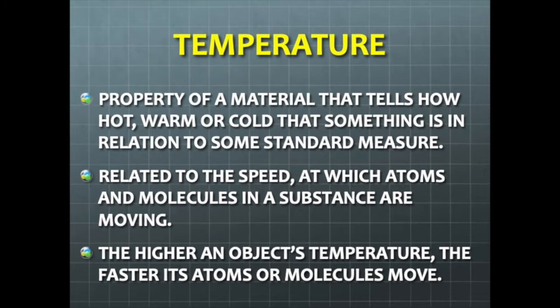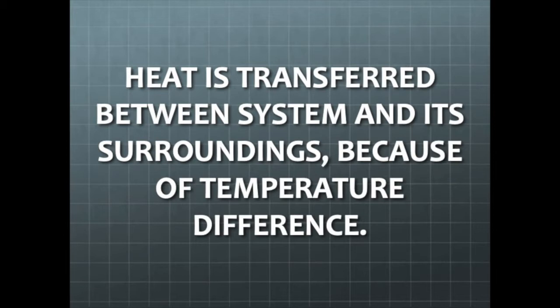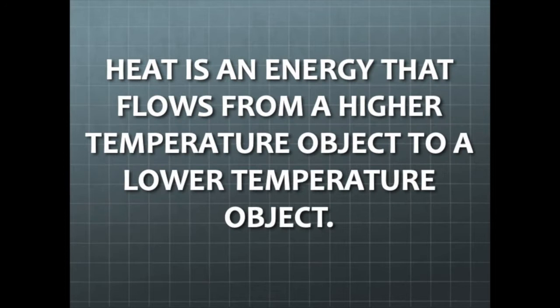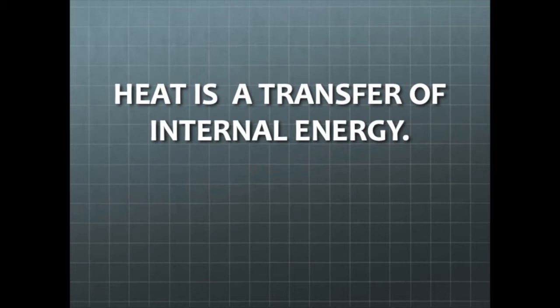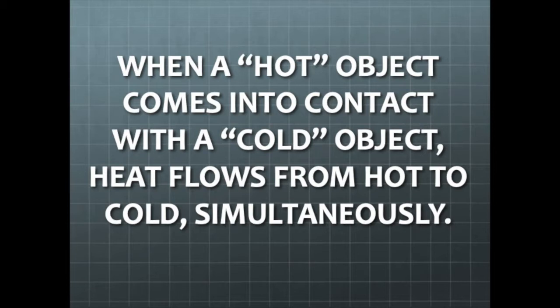Temperature is the property of a material that tells how hot, warm, or cold something is in relation to some standard measure. Temperature is also related to the speed at which atoms and molecules in a substance are moving — the higher an object's temperature, the faster its atoms or molecules move. Heat is transferred between a system and its surroundings because of temperature difference. Heat is an energy that flows from a higher temperature object to a lower temperature object, and is a transfer of internal energy. When a hot object comes into contact with a cold object, heat flows from hot to cold simultaneously.